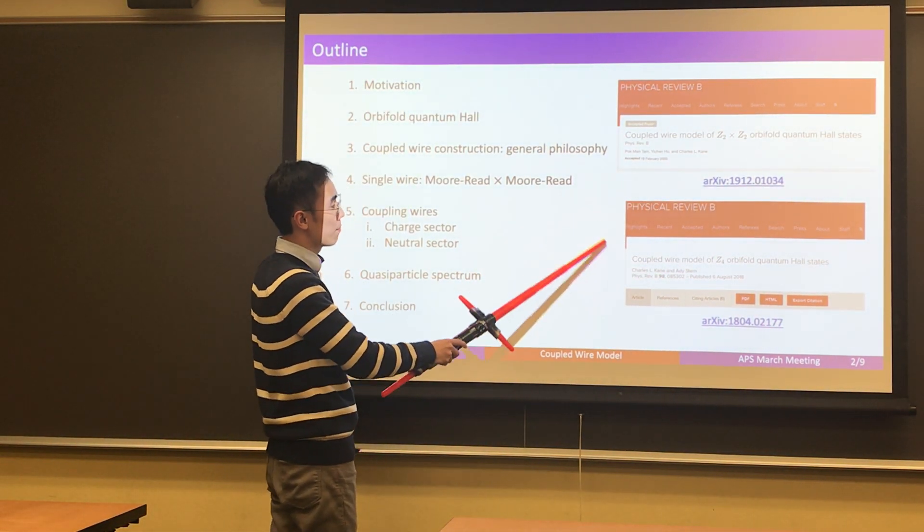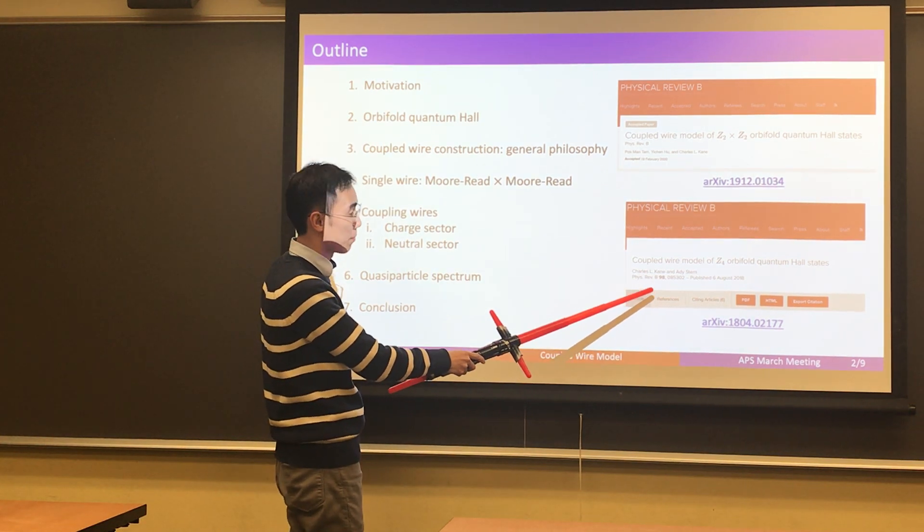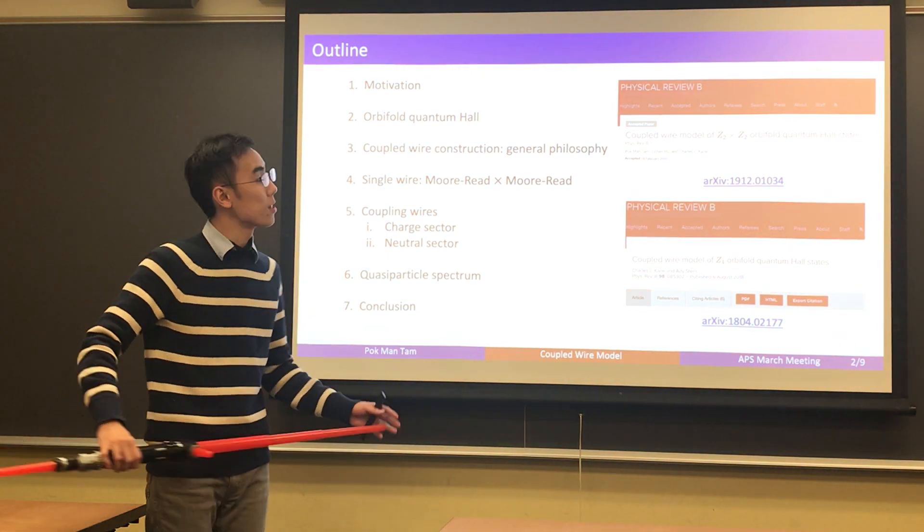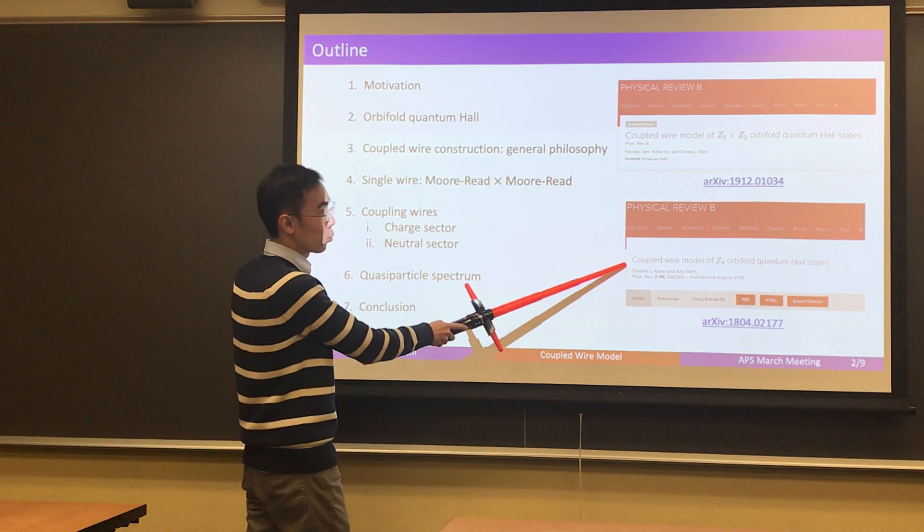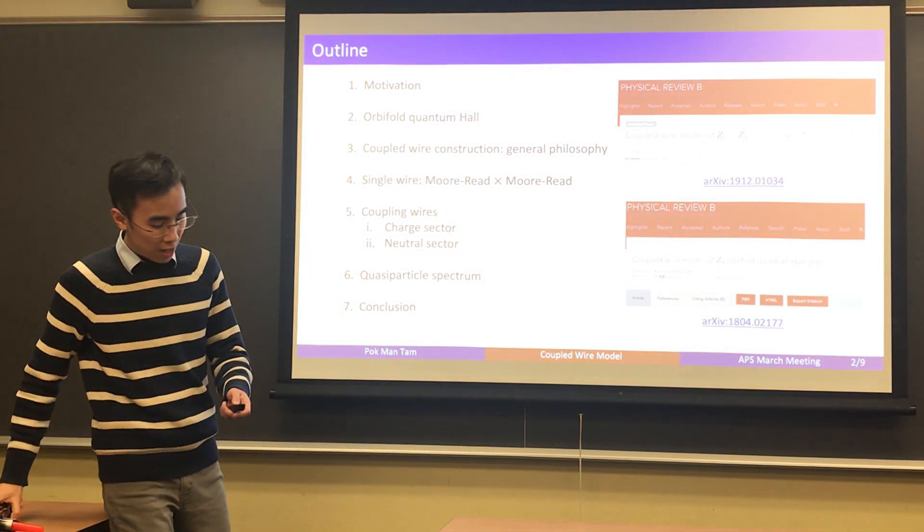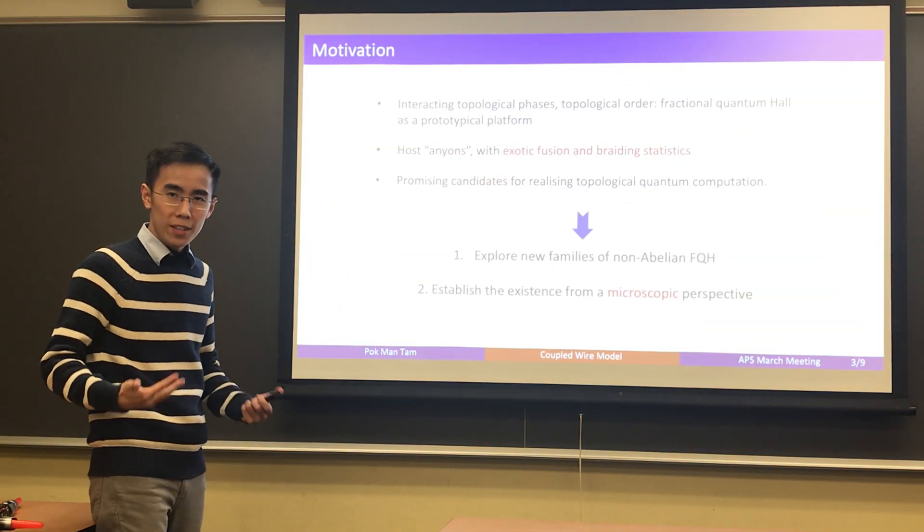The result being presented here has been summarized in this newly accepted paper to PRB, which is actually a companion paper to an earlier one also on PRB written by Charlie and Abby Stern, about the coupled-wire construction of Z4 orbital quantum Hall states. The relationship between these two papers would be explained in two slides, but here first let me motivate the work that we are pursuing here.